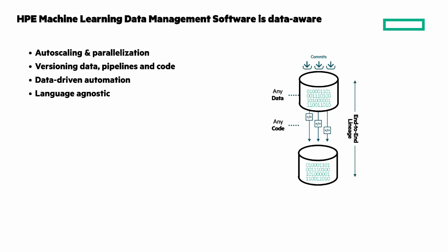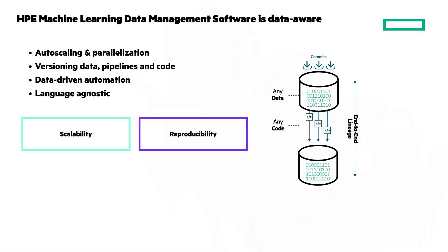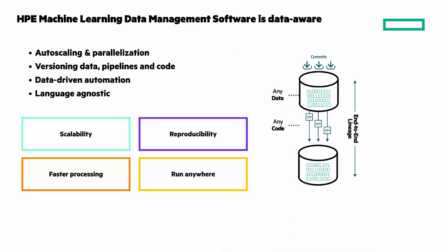Data-driven automation: the pipelines automatically trigger when data is added or changed. Language agnostic, based on native Kubernetes container support. The benefits include the ability to scale to process petabyte-sized workloads, reproducibility of any intermediate artifact or training data set for compliance, debugging, and trustworthiness of models, faster processing to reduce cycles from weeks to days, and the ability to run anywhere, any code, and process any data.